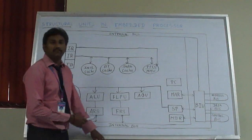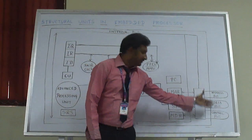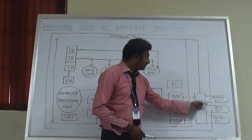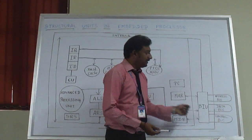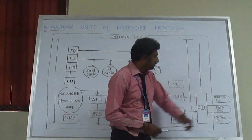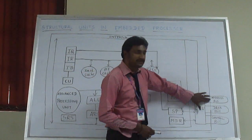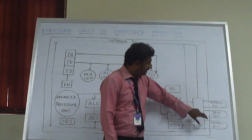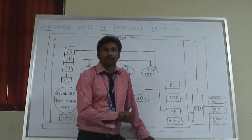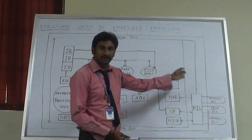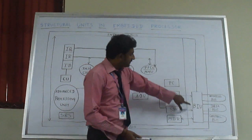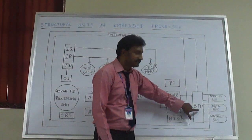The processor wants to communicate with the external world only through the buses. Without buses it cannot communicate with any device — it may be a memory device. So the buses are: address bus, data bus, and control bus. The address bus carries the address, the data bus carries data, and the control bus carries a set of control signals — such as whether you are going to do a read operation or write operation, and whether you are transferring data from processor to memory or memory to processor. All these are interfaced with the processor by the BIU, that is the Bus Interface Unit.